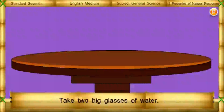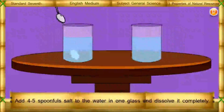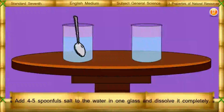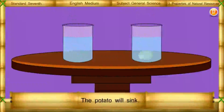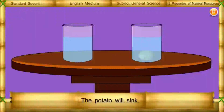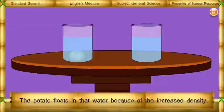Try this. Take 2 big glasses of water. Add 4 to 5 spoonfuls of salt to the water in one glass and dissolve it completely. Now place a potato in the water in the second glass. The potato will sink. Take out that potato and put it in the salt water and observe. The density of water in that glass is greater due to the dissolved salt, and the potato floats because of that increased density.